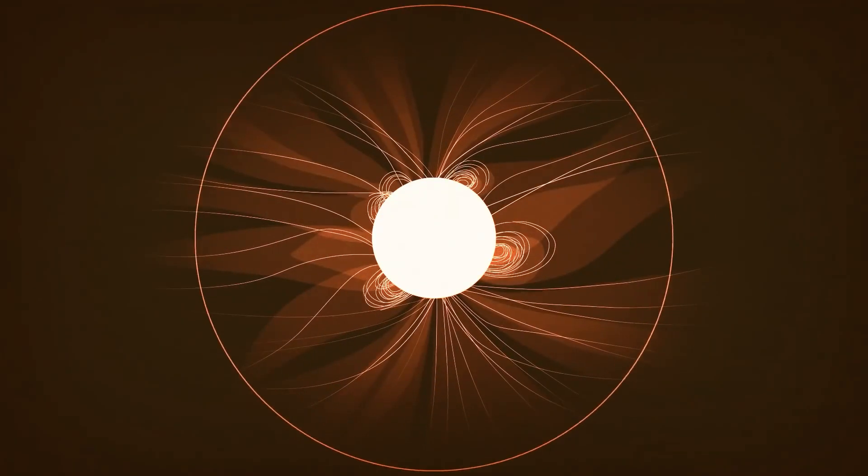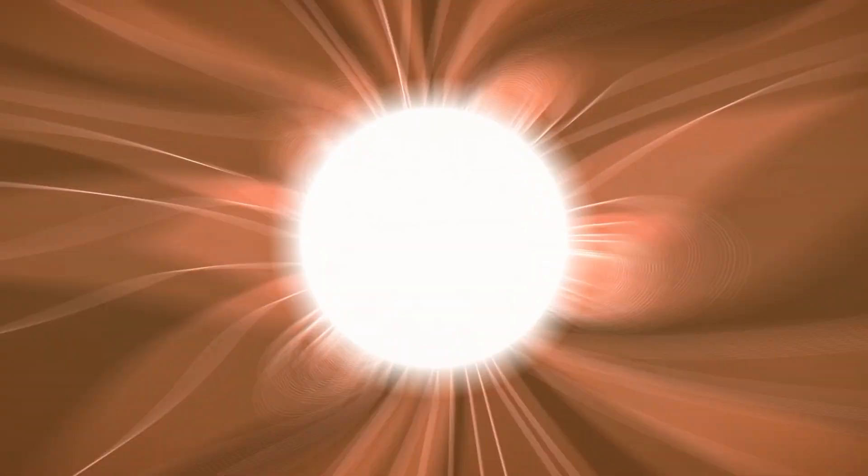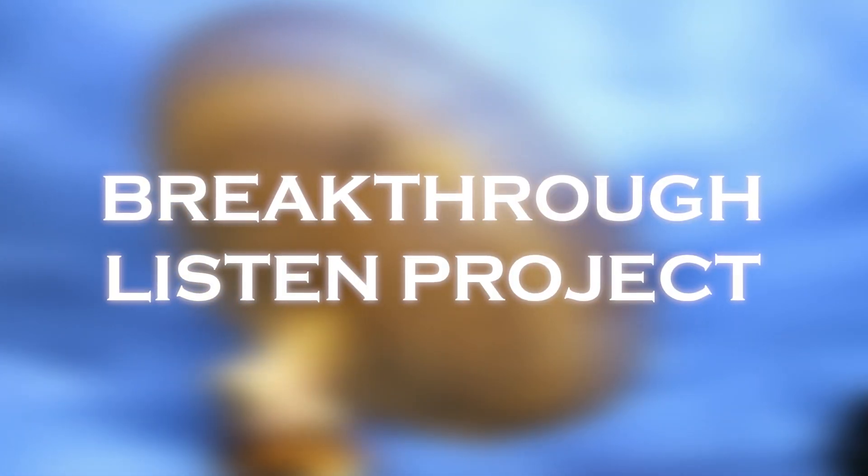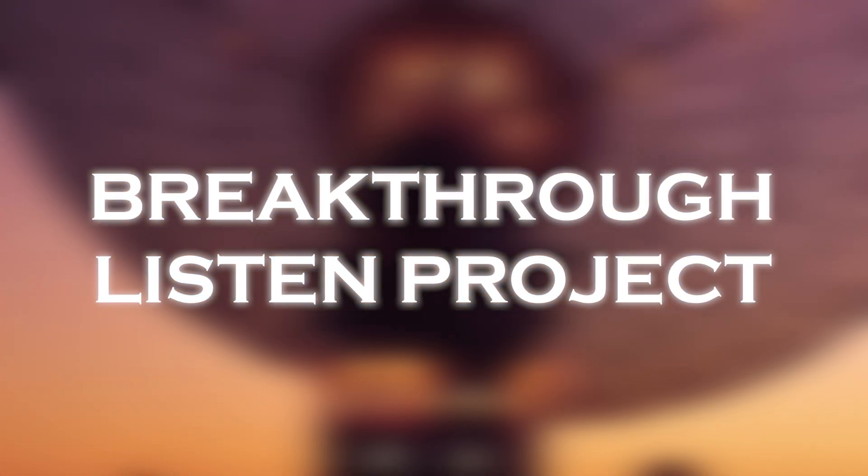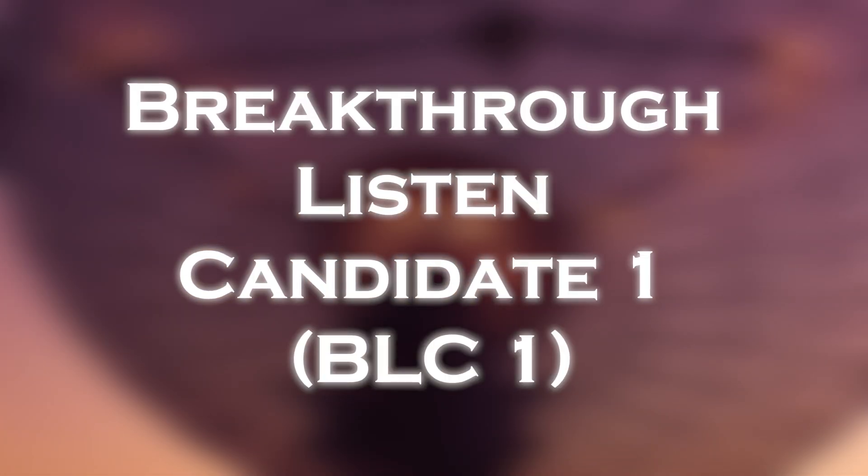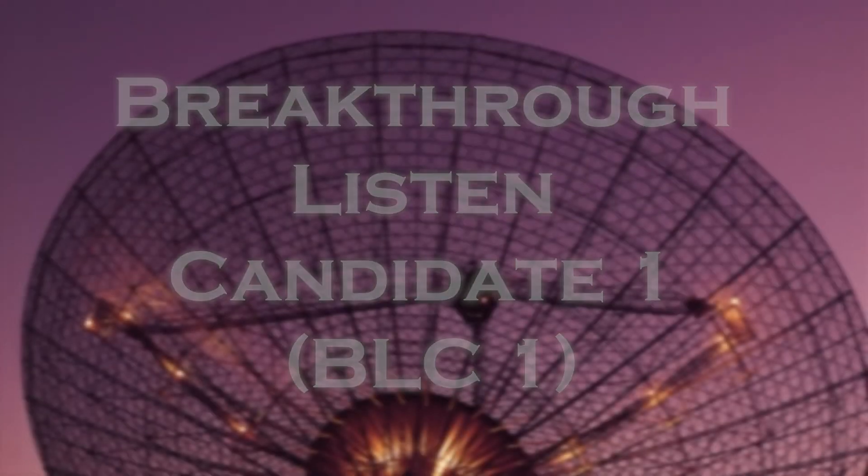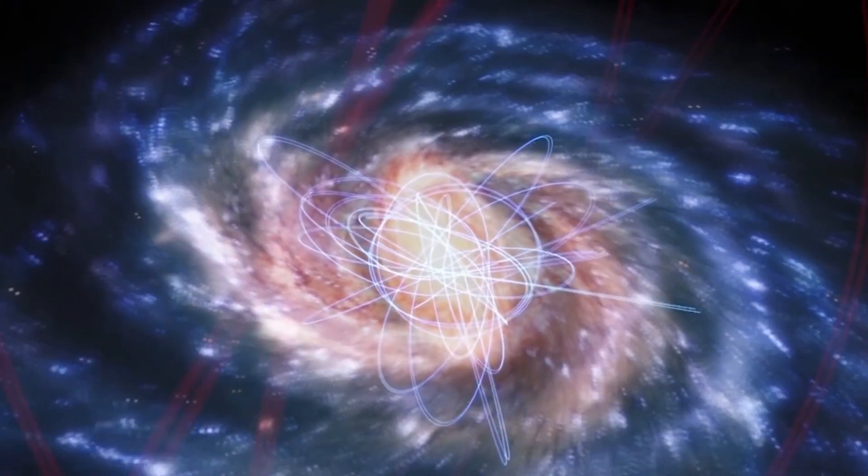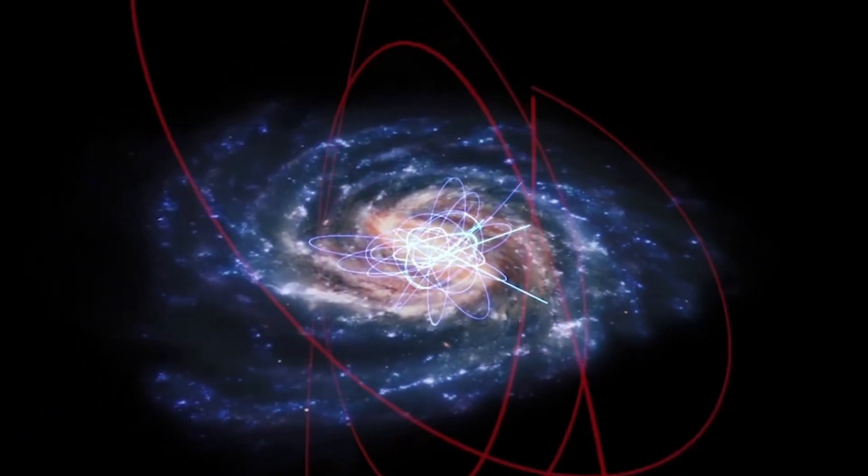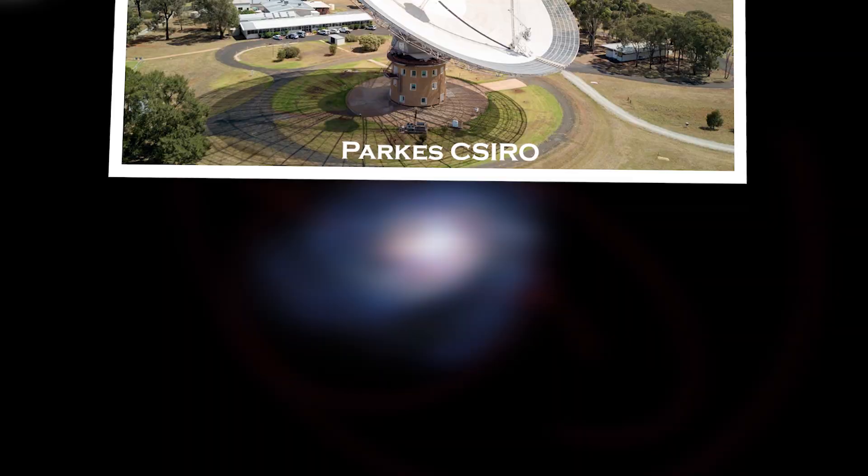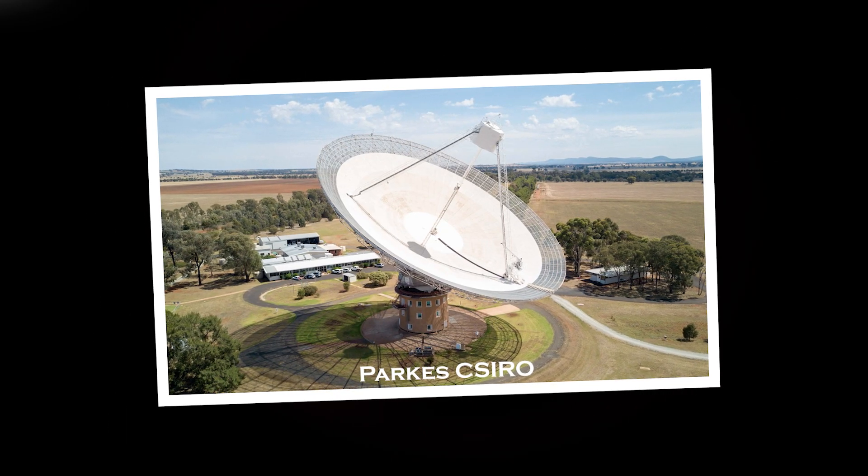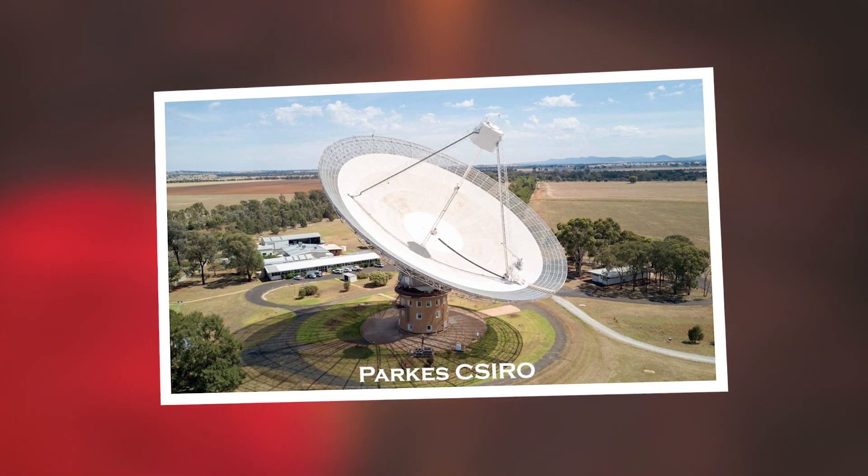But where did the signal between these two stars come from? The groundbreaking Breakthrough Listen project, dedicated to searching for extraterrestrial communication in the universe, has named this signal Breakthrough Listen Candidate 1, BLC-1. The project, which has approximately $100 million in funding, has used thousands of hours of observation with state-of-the-art telescopes around the world. The signal was detected by the Parkes Observatory radio telescope in New South Wales, Australia.